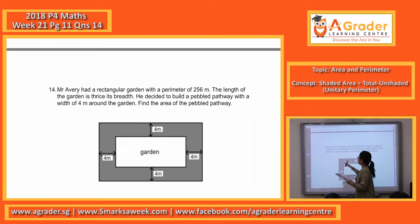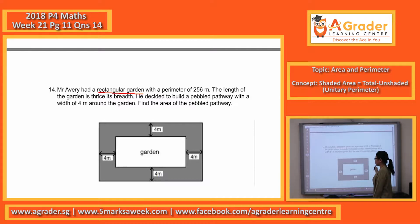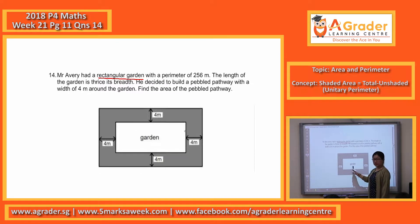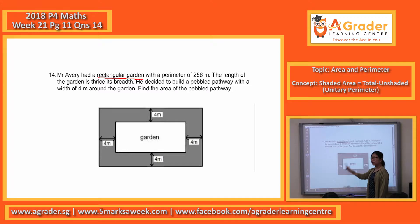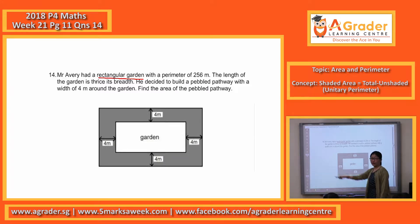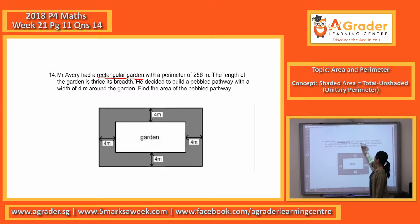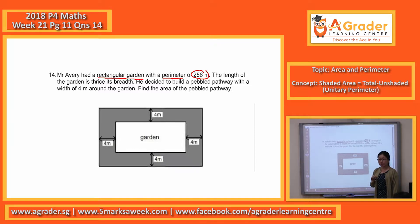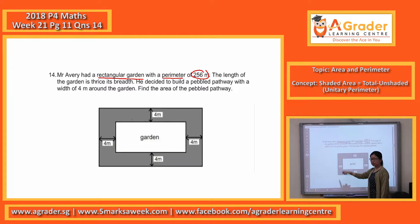Mr. Avery had a rectangular garden. The garden is the inner rectangle — not the external, bigger one. The inner one has a perimeter of 256m.